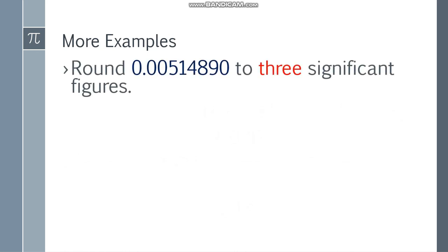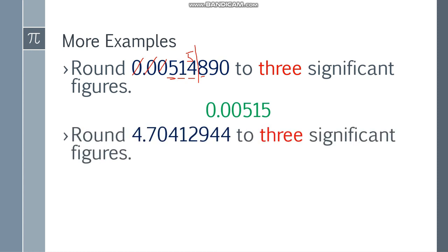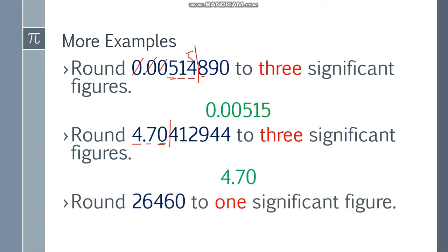More examples. Round 0.0051489 to 3 significant figures. Hindi ka-counted itong mga 0 na to — start ka sa 5: 1, 2, 3. Cut. Next digit ay 8 — dahil 5 or more siya, magiging 5 na to. So that will be 0.00515. Next one, round 4.70412944 to 3 significant figures. Ang unang significant figure ay 4 — 1, 2, 3. Stop. Ang next digit mo ay 4 — na less than 5 siya. Hindi tayo mag-a-add, so as is lang siya. Final answer is 4.70. Next, round 26,462 to 1 significant figure. Pinaka-unang significant figure mo ay 2 — cut na tayo. Ang next digit ay 6 — dahil more than 5 siya, magiging 3 na to. The final answer will be 30,000.